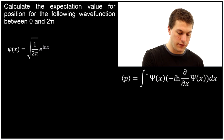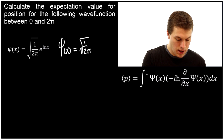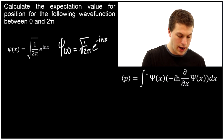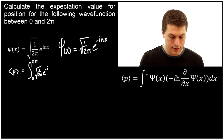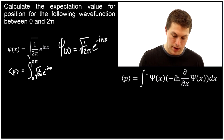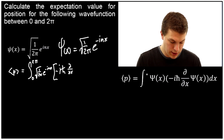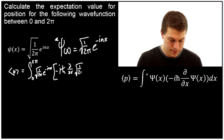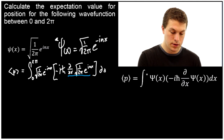Now let's do the same thing for momentum, starting with the same wave function. We write the complex conjugate again by switching the sign of i, giving negative in x. Then we write our formula: the expectation value for p, integrated from 0 to 2π, equals our complex conjugate first — square root of 1 over 2π, e to the negative in x — then the momentum operator. The momentum operator is a bit more complicated: it's negative i h-bar times the first derivative of the original wave function, which is square root of 1 over 2π, e to the positive in x, dx. When applying the momentum operator, always evaluate that derivative first.